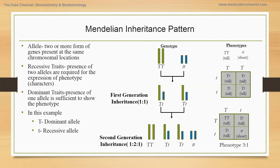Mendel proved this through multiple experiments and proposed the inheritance pattern of genes. In the first generation, the genotypic ratio is 1:1, and the phenotypic ratio is also 1:1. In the second generation, the genotypic ratio is 1:2:1 — one homozygous TT, two heterozygous, and one lowercase tt. In terms of phenotype, since even a single capital T gives the tall phenotype, you have three tall progeny and one short progeny. So the dominant to recessive phenotypic ratio is 3:1.